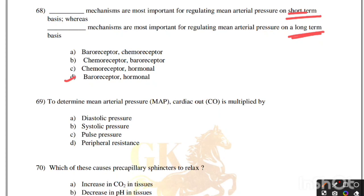To determine the mean arterial pressure, cardiac output is multiplied by: diastolic pressure, systolic pressure, pulse pressure, or peripheral resistance. Correct answer is option D, peripheral resistance.